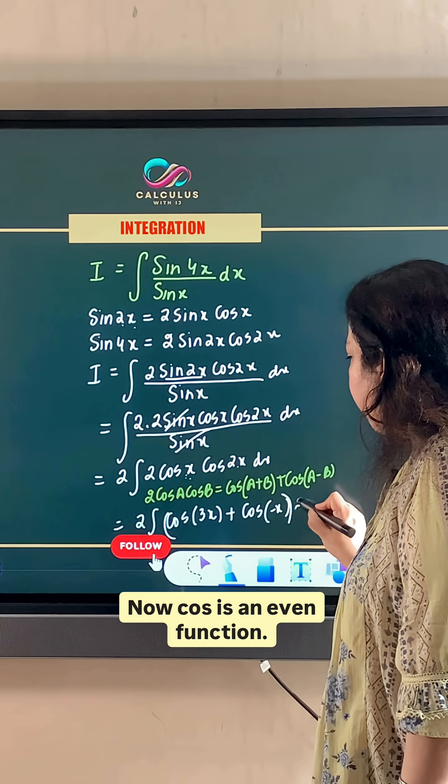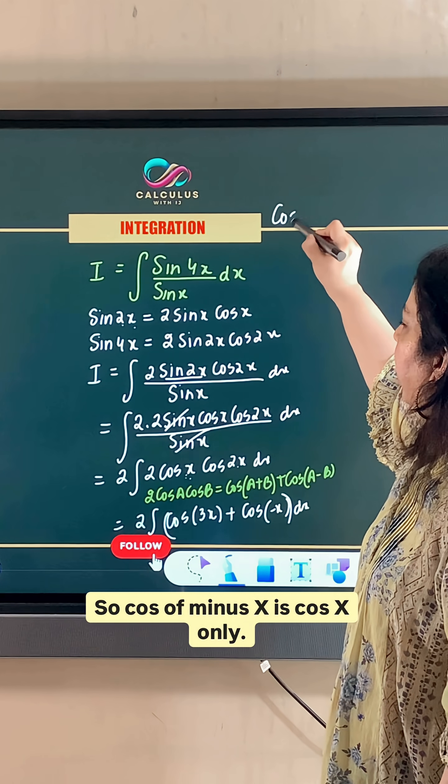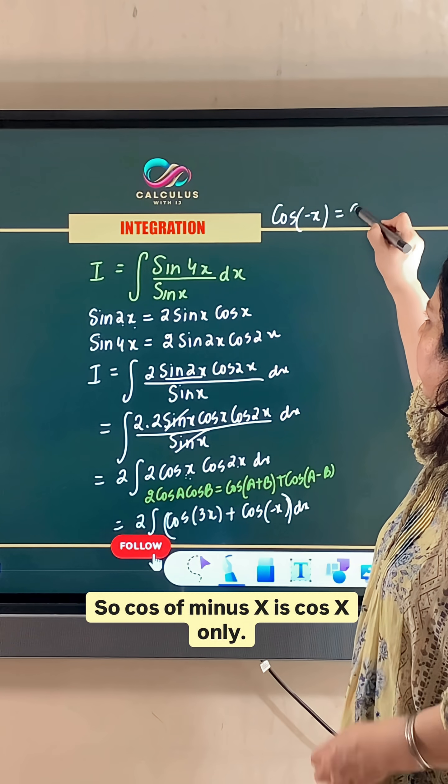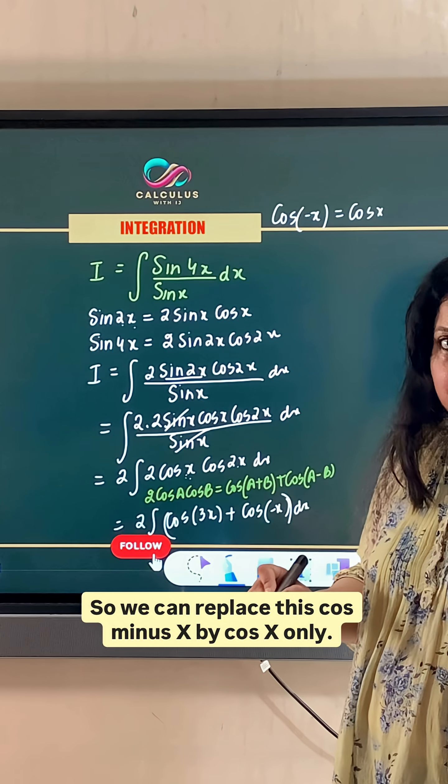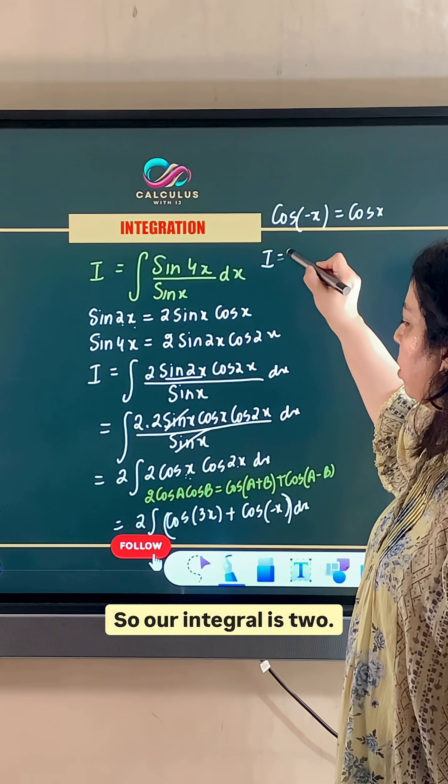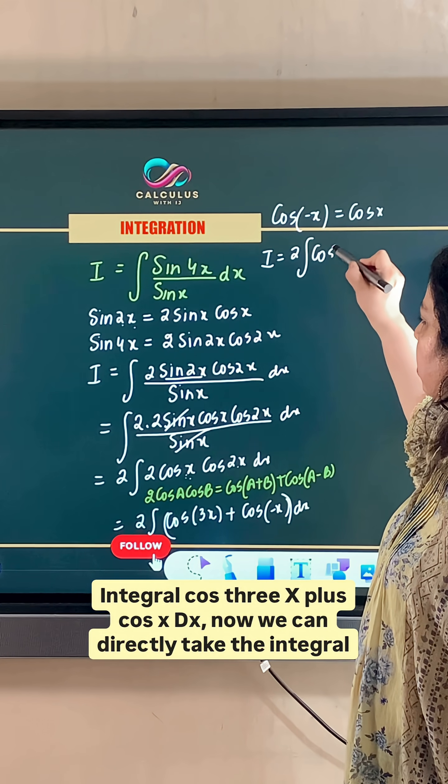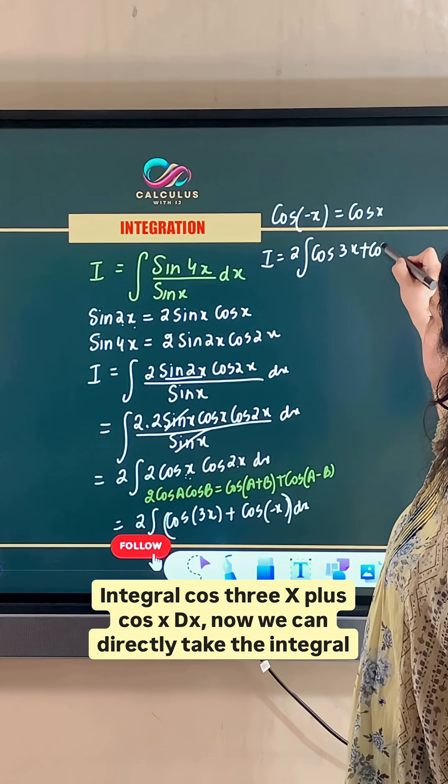Now, cos is an even function. So cos of minus x is cos x only. So we can replace this cos minus x by cos x only. So our integral is 2 integral cos 3x plus cos x dx.